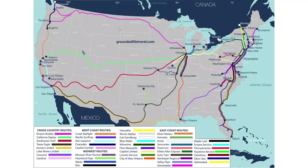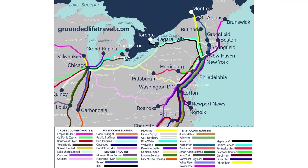We have the routes broken down by region so you can zoom in closer. More maps like that are available on the website groundedlifetravel.com — just click on the maps logo or the maps button from the dropdown menu. We also have maps broken down by individual states.